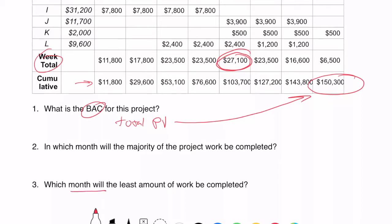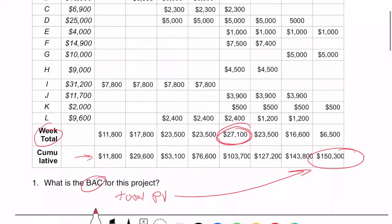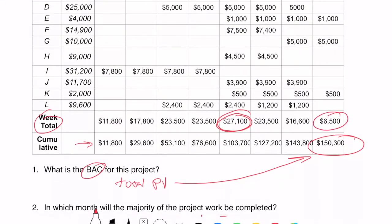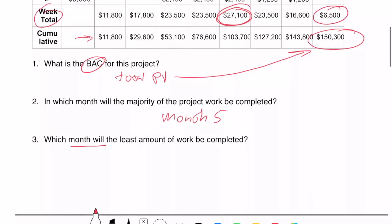Which month will the least amount of work be completed? Well, that's going to be month, I believe, month eight. Yeah, because we only have $6,500 that we're planning to get done in that month.